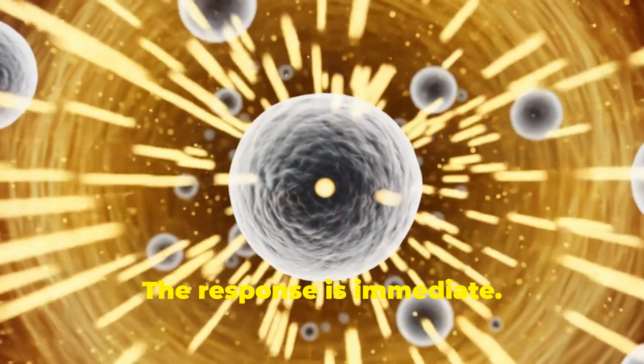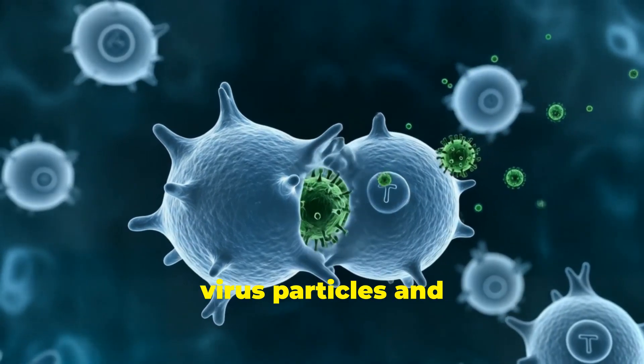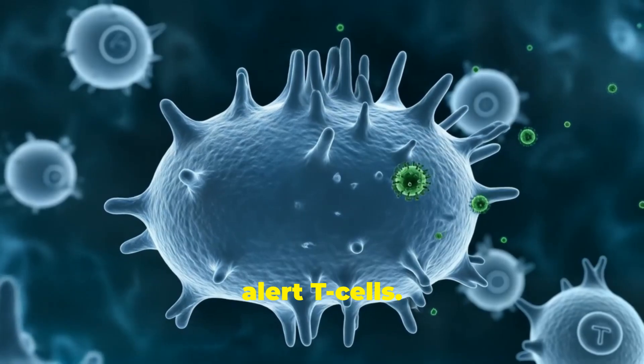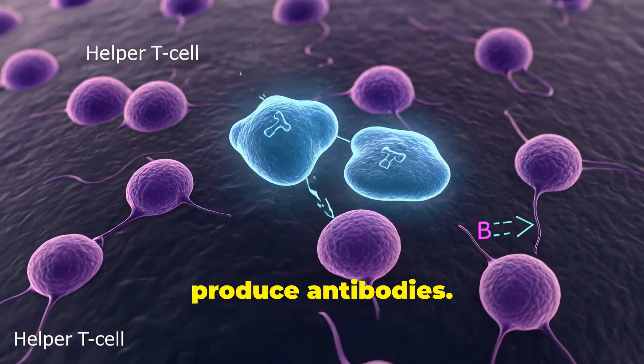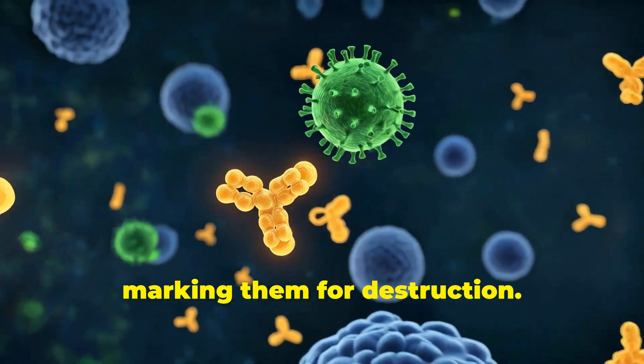The response is immediate. Neutrophils rush to the lungs. Macrophages devour virus particles and alert T cells. Helper T cells instruct B cells to produce antibodies. Antibodies lock onto the virus, marking them for destruction.